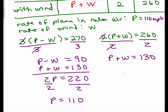What about the wind? We only solved for P, so now we have to go back and plug it into one of these equations. So 110 + W = 130, subtracting 110, I get 20. So the wind is 20. That seems reasonable for the wind.